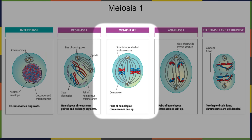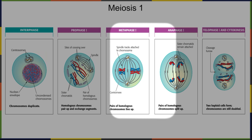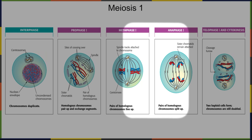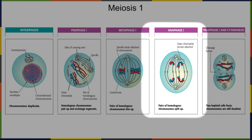The next stage in meiosis one is anaphase one. In anaphase, the pair of homologous chromosomes splits up while the sister chromatids remain attached — we're separating the homologues, not pulling sister chromatids apart. Each side of the cell gets either the maternal or the paternal pair of homologues. A helpful mnemonic: the A in anaphase can be thought of as the A in 'apart' — the chromosomes are pulled apart.